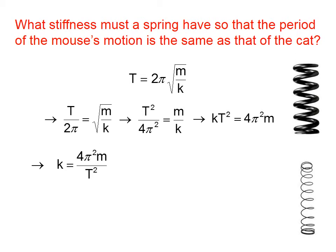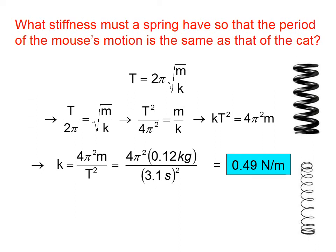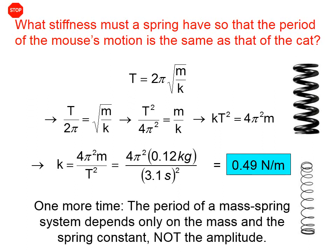We want to know the spring constant for the case that the mouse, which has a mass of 0.12 kilograms, would have the same period of motion, 3.1 seconds, as the cat. And not surprisingly, that is a much flimsier spring if we want the cat and the mouse to oscillate back and forth together.